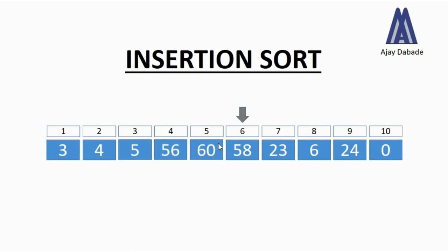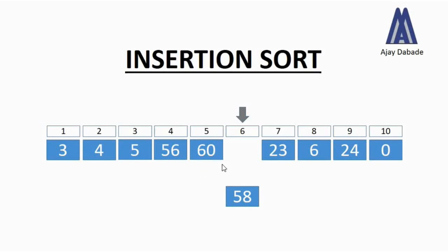The pointer has moved to the sixth position, where we have the number 58. We compare this number with those on the left-hand side, starting with 60. Now 58 is less than 60, but 58 is greater than 56. So we only shift 60 one position to the right, and then we place 58 at its right position.